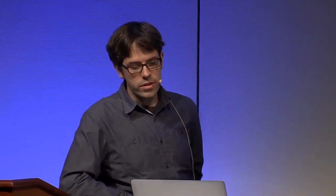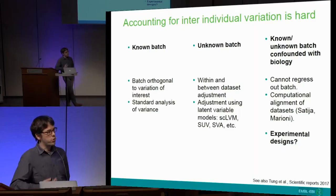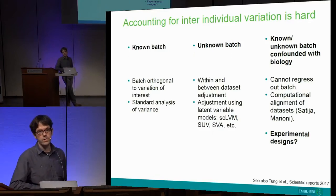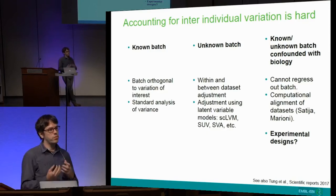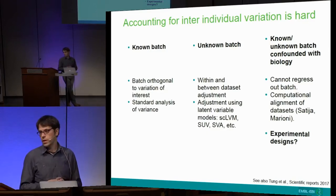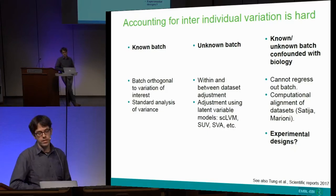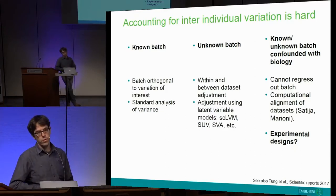Simple batch is an experimental covariate we can adjust for - we regress it out and we are all happy. We do this on a day-by-day basis. Then there's the unknown batch, which is a factor that perturbs our experiments but we don't really measure it and we don't know its state. We heard about the cell cycle. Dana has mentioned this, but there are methods to infer these variables from the data so that we can then adjust for them in our analysis.